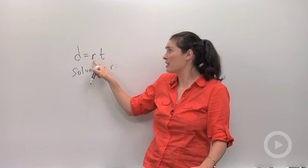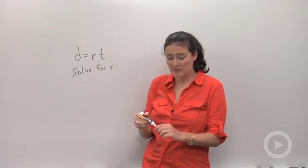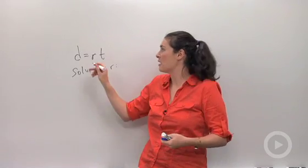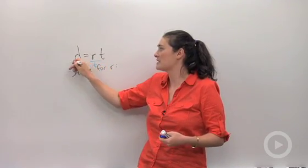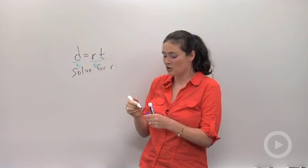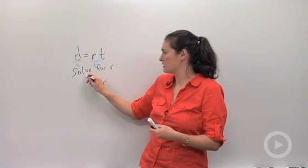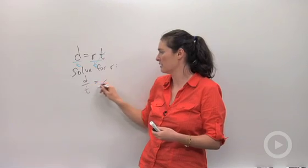Right now, R is being multiplied by T. The opposite of multiplying is dividing. So the way I would get R all by itself would be to divide both sides of the equation by T. So I'd be left with R equals D over T.